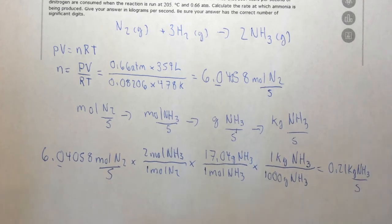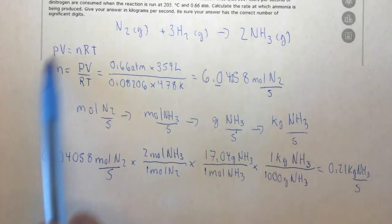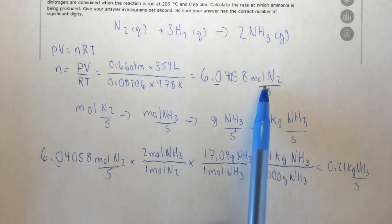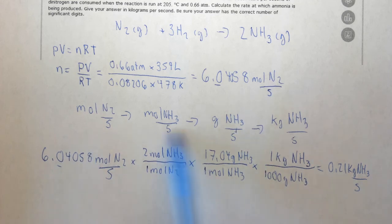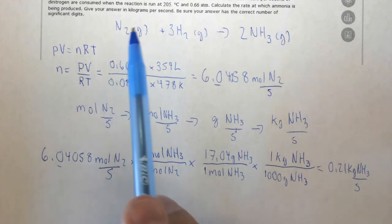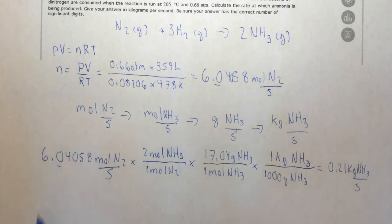So again, to review very quickly, use PV equals nRT to find the moles of the gas, then use dimensional analysis to find whatever unit it is for the other product that they're asking about, or if it's a reactant that they're asking about.